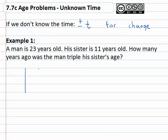For example, if we've got a man who's twenty-three, his sister's eleven, how many years ago was the man triple his sister's age? We see we're talking about a man and his sister. We are told right now that the man is twenty-three and his sister is eleven. So let's plug that in to the now column. The man is twenty-three, the sister is eleven.